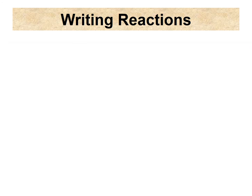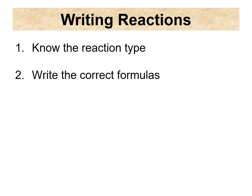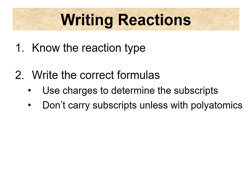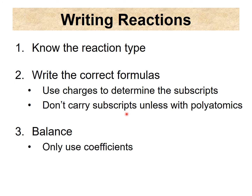Those are our five reaction types. We use them when writing reactions: first, identify the reaction type — knowing the type tells you what the products will be. Then write the correct formulas using swap and drop, remembering the charges and that polyatomic ions stay the same (sulfate is SO₄²⁻, it stays SO₄²⁻). Finally, balance the equation. Make sure you know these reaction types so you can write balanced equations.